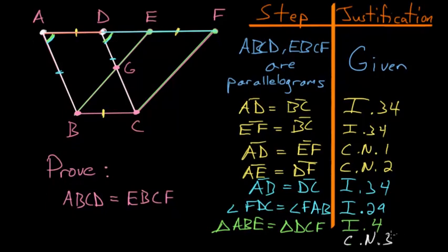So, if we use common notion number 3, we're essentially subtracting the triangle DEG from each side of this equation. And what we're left with are these two trapezoids